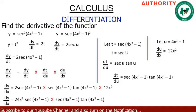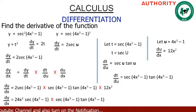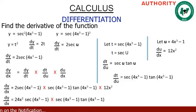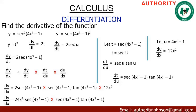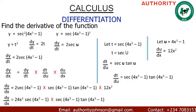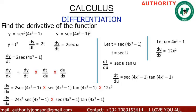So the derivative of y = sec²(4x³ - 1) with respect to x is: dy/dx = 24x²·sec(4x³ - 1)·sec(4x³ - 1)·tan(4x³ - 1). Thank you very much, let's continue.